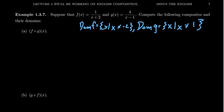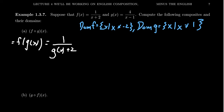Let's now compose these functions together and see what happens. When you do f of g of x, we're going to put g(x) inside of f. f of g of x looks like 1 over g(x) plus 2. But g(x) is itself a fraction, so you get 1 over 4 divided by x minus 1, plus 2.